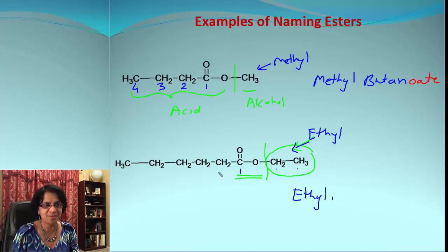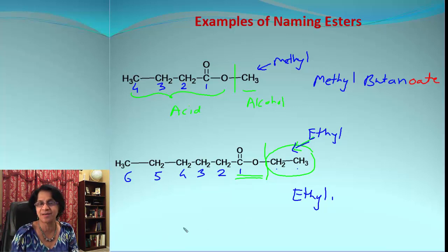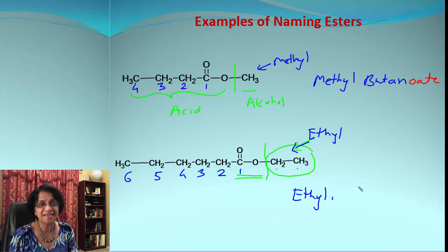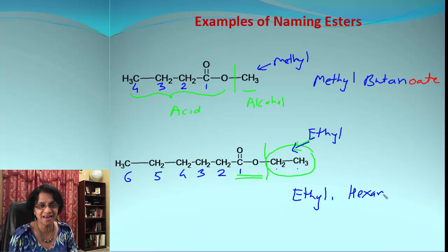Write down the substituent — ethyl — then start numbering from the carbonyl. We got six carbon atoms, so six stands for hexa. It's an ester because of this bond in between, so it will be hexan- with an ester ending.